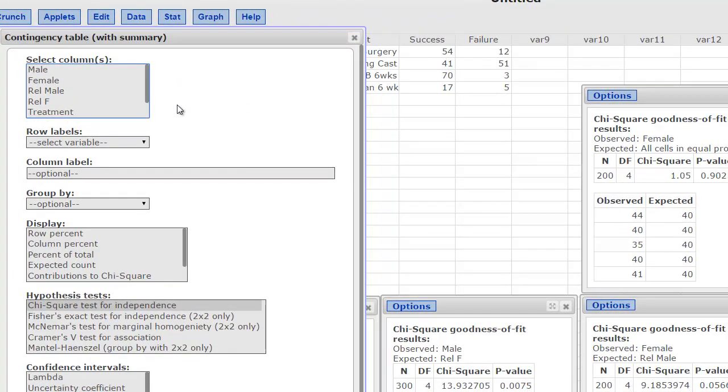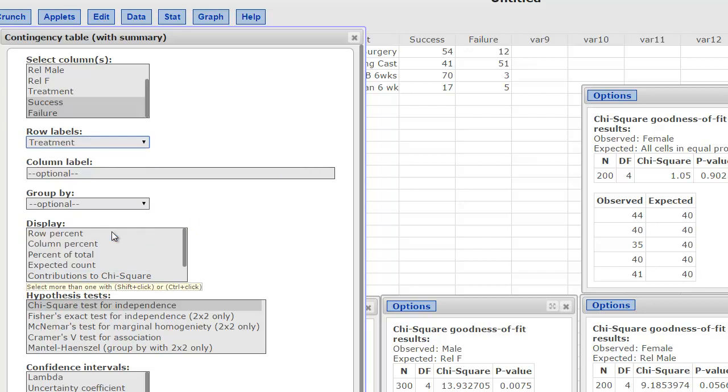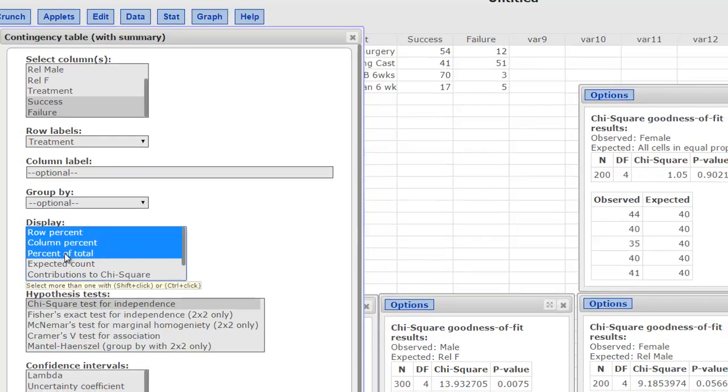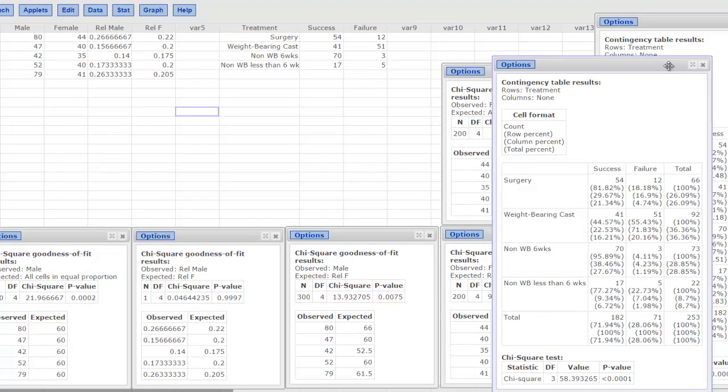You have to select the columns where your numbers are. You can see that those are successes and failures. So if you go success, hold down control, failure, and then you have to tell it where the row labels are. The row labels are right here right next to it. You can't really read it anymore but it's called treatment. For this table I asked it to give us a row, column, and total percent, and then compute and you can see I get the same thing.